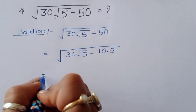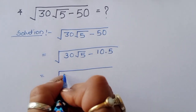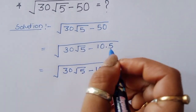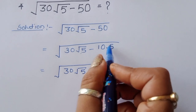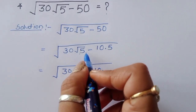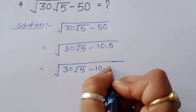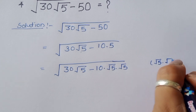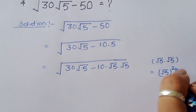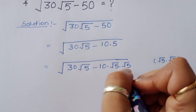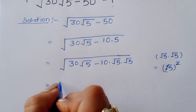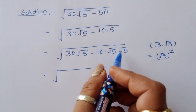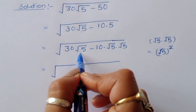Now it equals square root of 30 times square root of 5 minus 10 times 5. Since √5 × √5 = (√5)², the square cancels with the square root to give 5. So we can write 10 times 5 as 10 times √5 times √5.